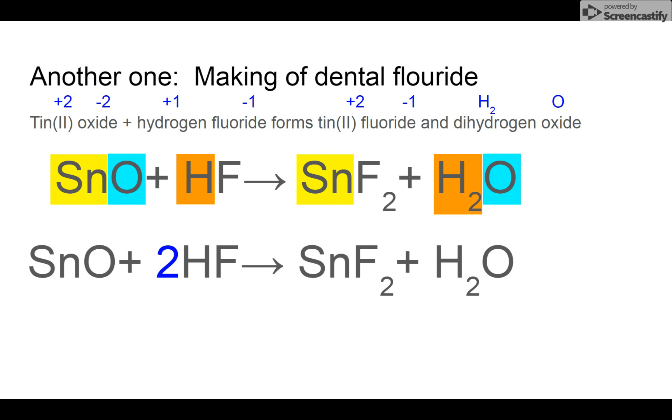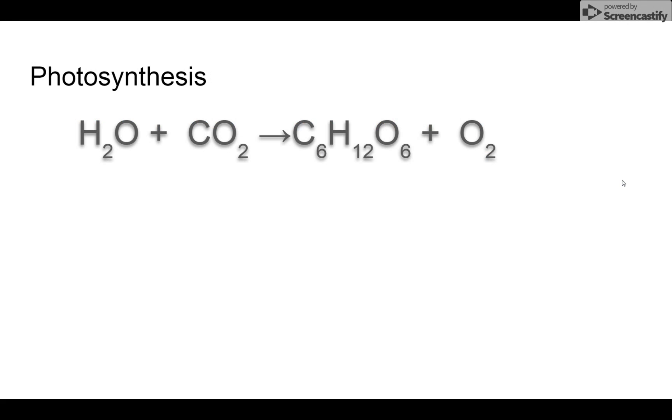And this is how they create this tin fluoride in your toothpaste. If you turn your tube of toothpaste over, it will say tin 2 fluoride on the back. And this is how it's made. Photosynthesis you studied in grade nine. This is how plants take water and our bad breath and they build sugar and oxygen. Can we figure this one out? Let's just start.